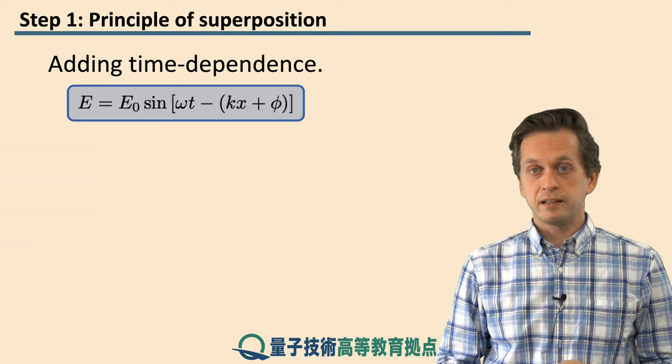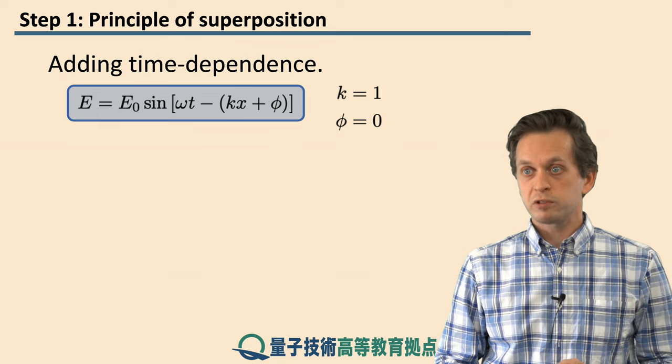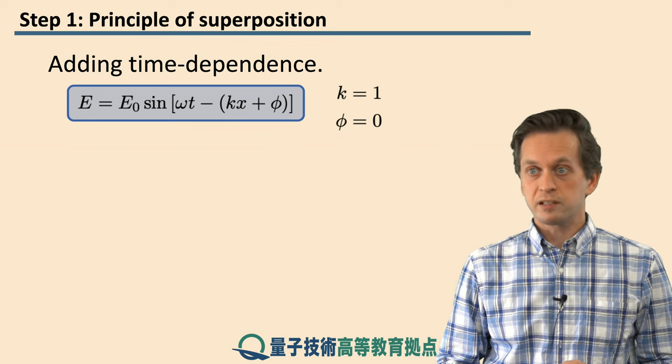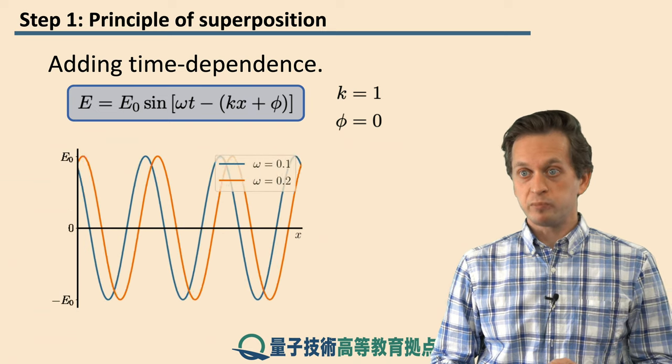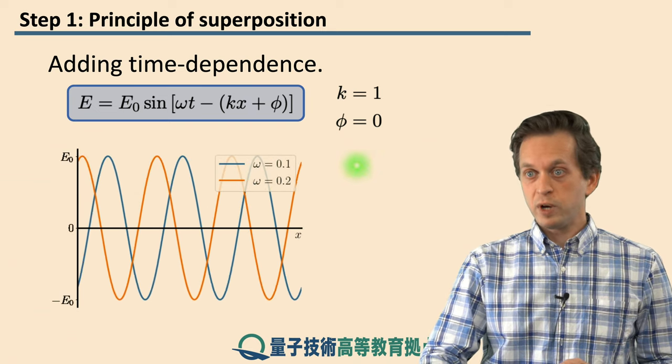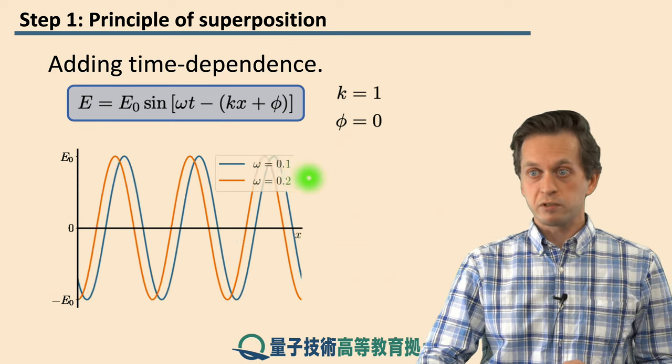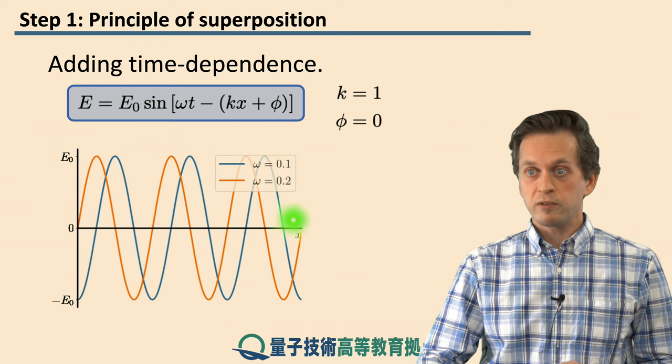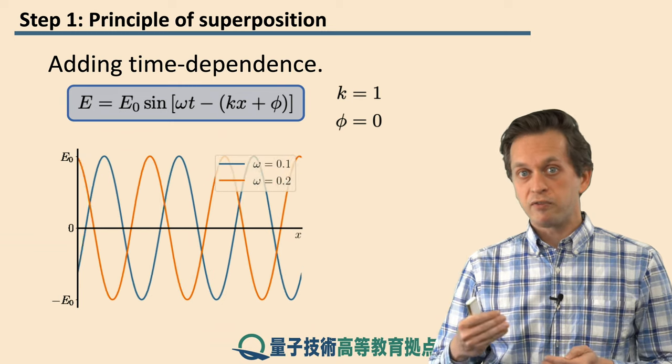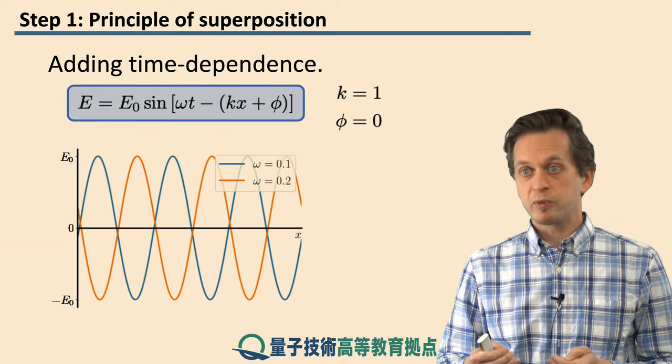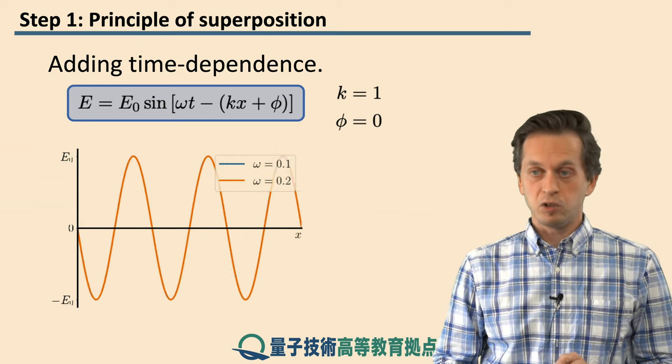So finally, let's add time dependence into the picture. We set k equals to one, and we also set the initial phase phi to be zero. And now the wave is actually propagating in time. Here we have two waves again. For the first wave, represented by the blue, we have omega equals to zero point one, whereas for the second wave we've got zero point two. Remember we said that omega determines how fast the wave is propagating in time. And we can clearly see that the orange wave is faster than the blue wave.